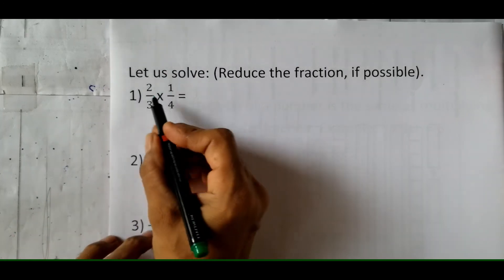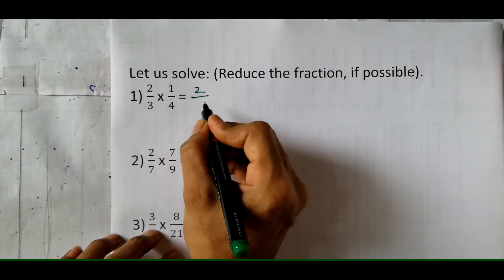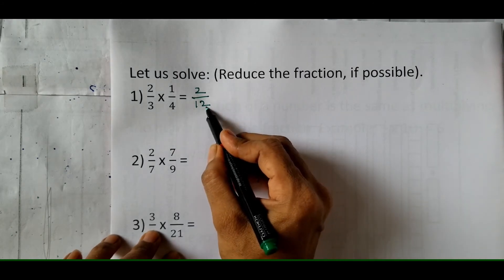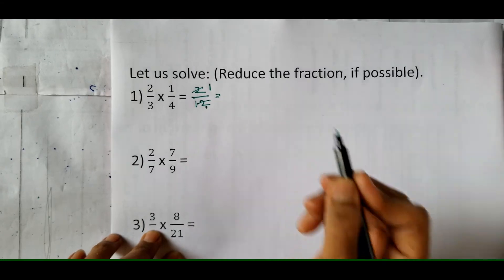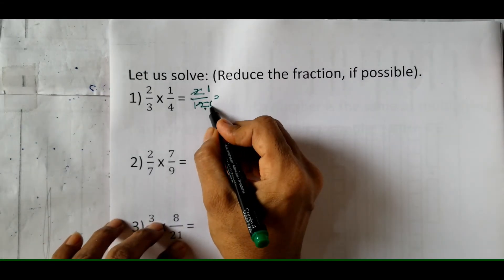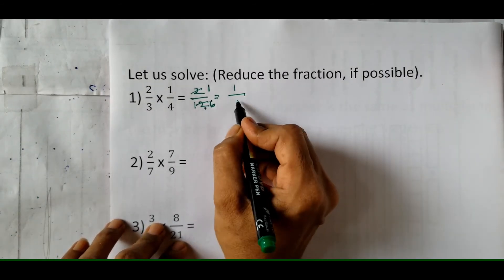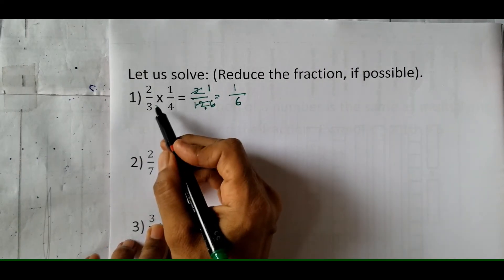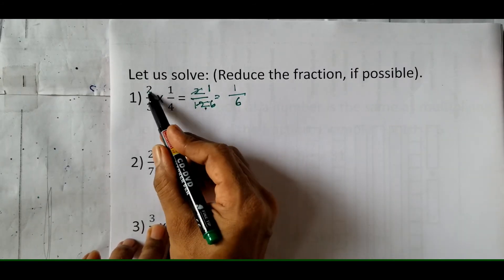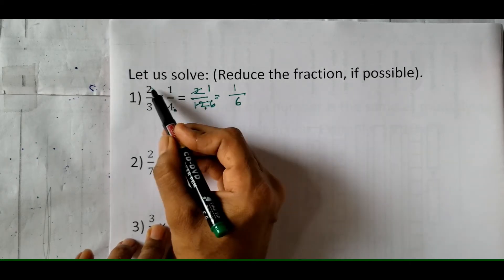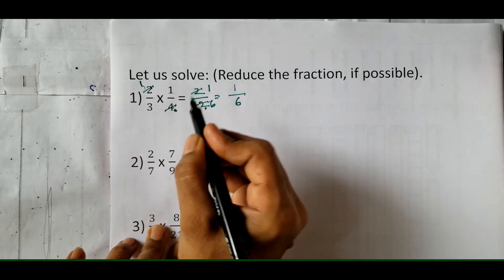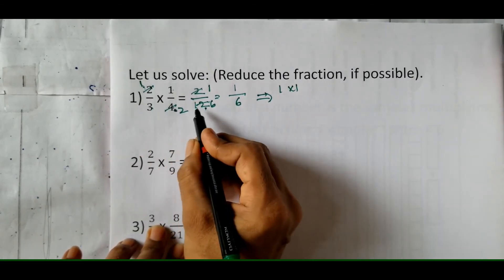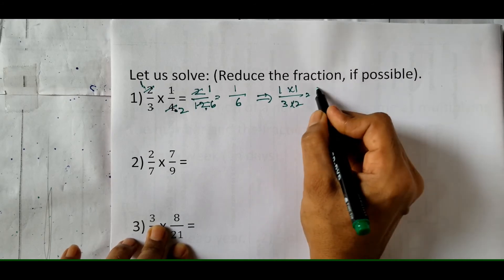There are two ways to multiply fractions. Either first multiply the numerators and denominators then simplify, or cancel common factors first. For example: 2 upon 4 into 1 upon 3 — multiply to get 2 upon 12, which reduces to 1 upon 6. Alternatively, since 2 and 4 are even, cancel directly: write 1 in place of 2 and 2 in place of 4, giving 1 into 1 over 3 into 2, which equals 1 upon 6. Both ways are fine.